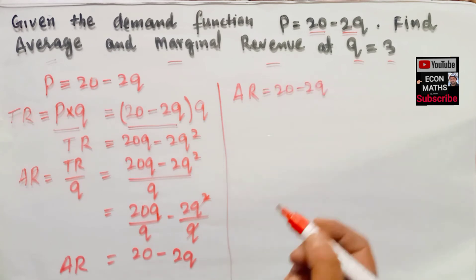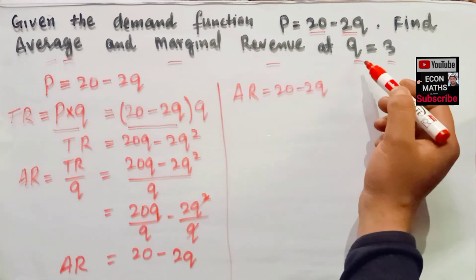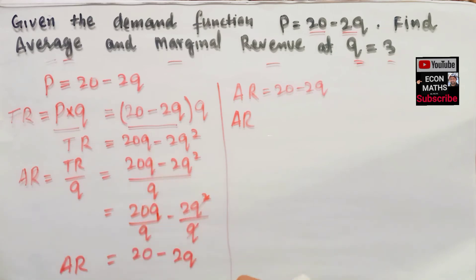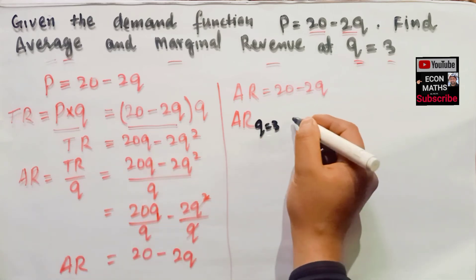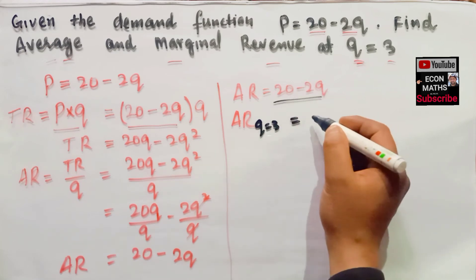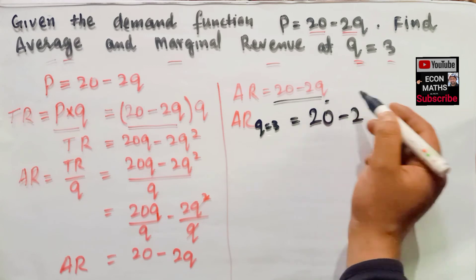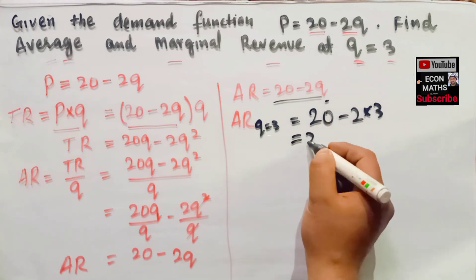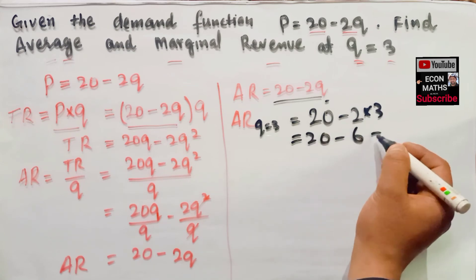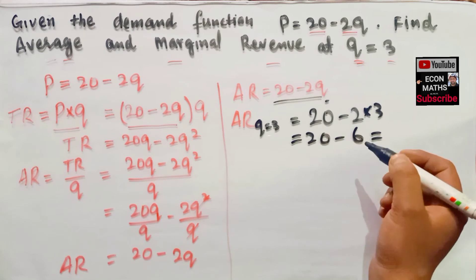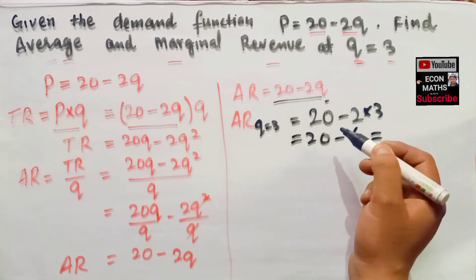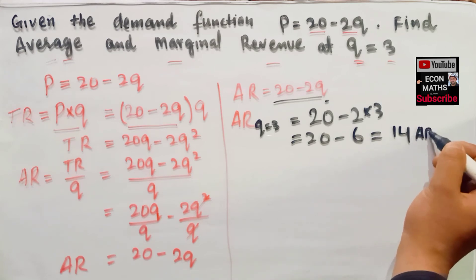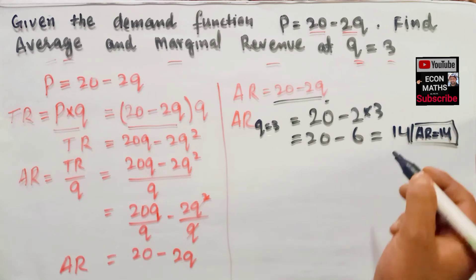Now, what is the average revenue when Q is equal to 3? We put the value of Q into the average revenue function: 20 minus 2 into 3, which is 20 minus 6, which comes out to be 14. So our average revenue is equal to 14.